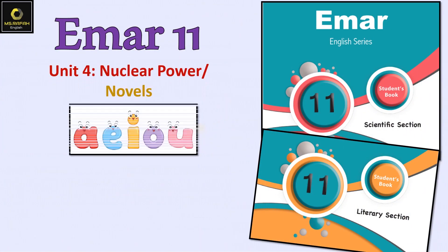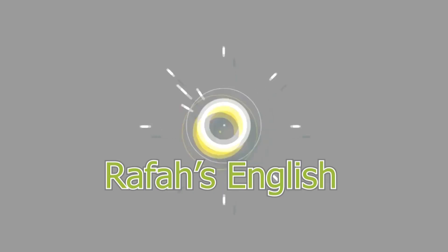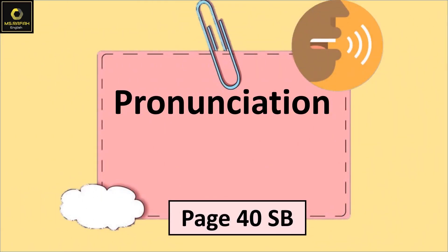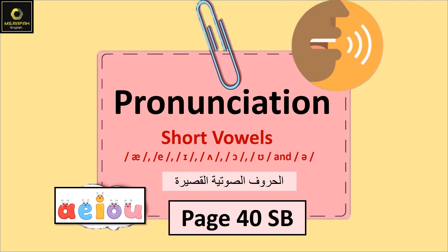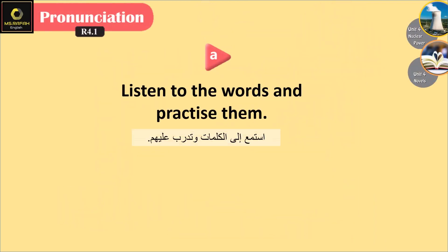Hello everyone and welcome to a new lesson with Miss Rafa. Today we're going to complete Unit 4: Nuclear Power and Novels. We're going to focus on pronunciation, so open your book and let's get started together. Pronunciation: short vowels. These sounds are formed from the vowel letters A, E, I, O, U, and their basic sounds are A, E, I, O, U.